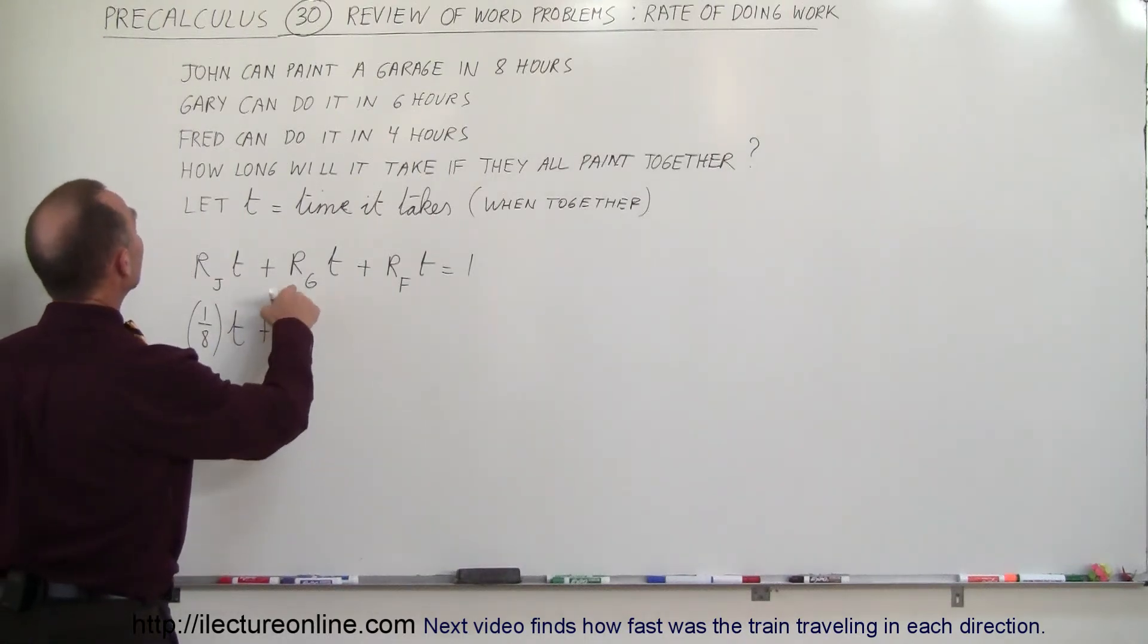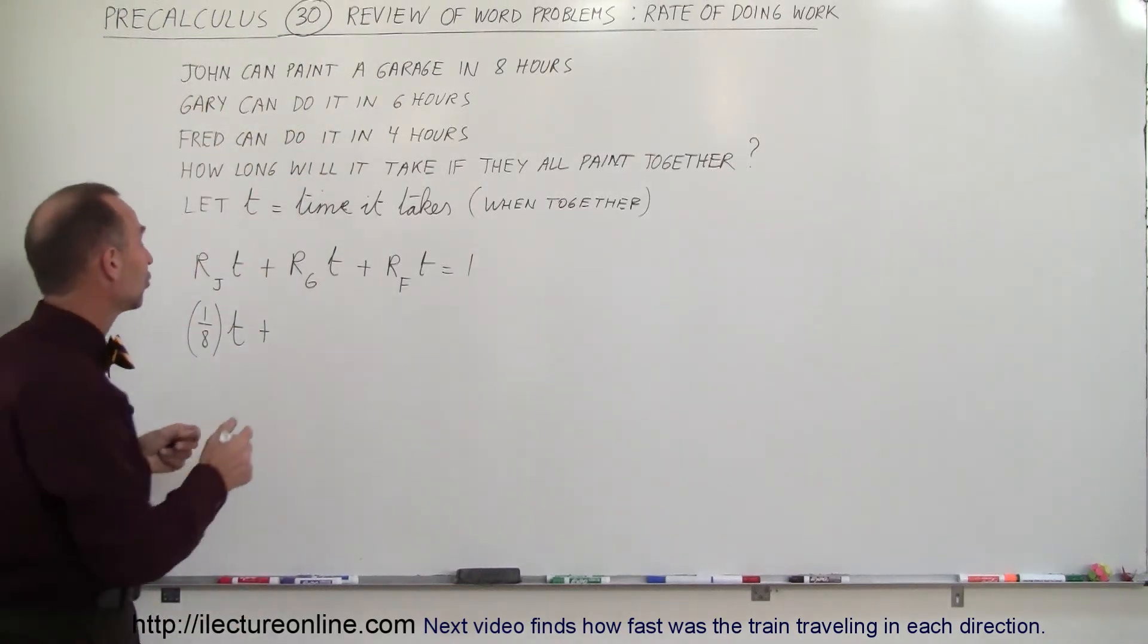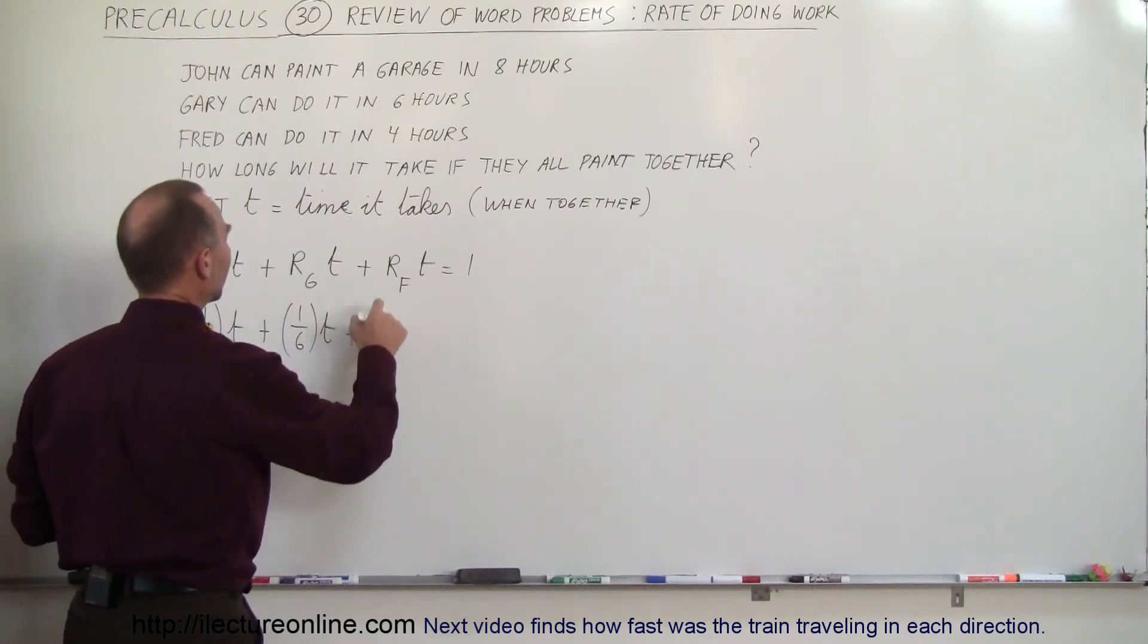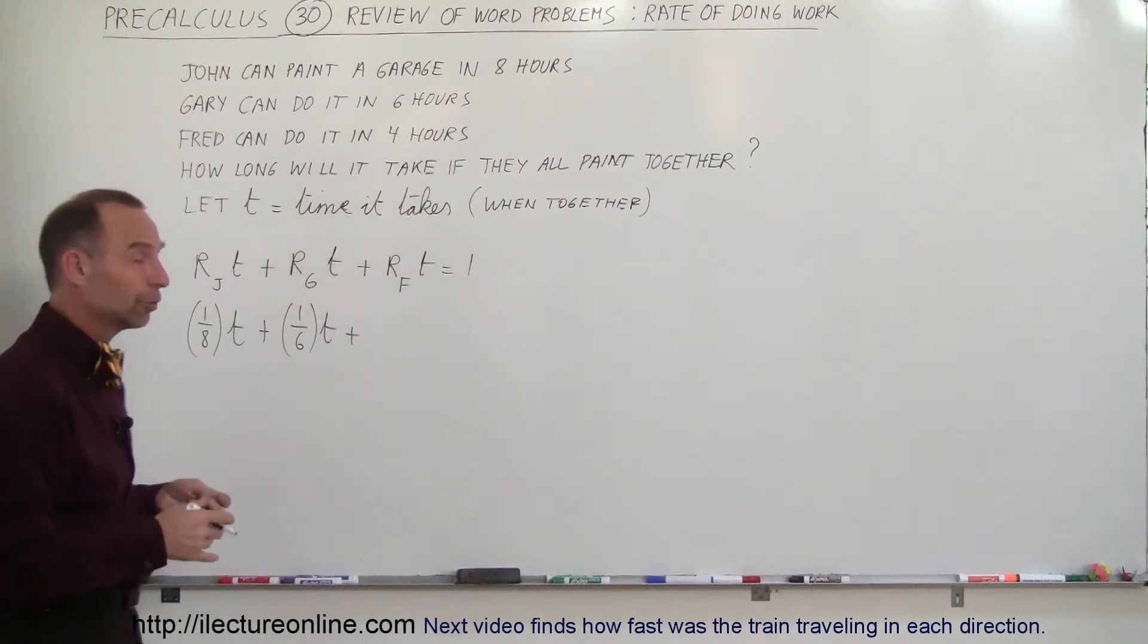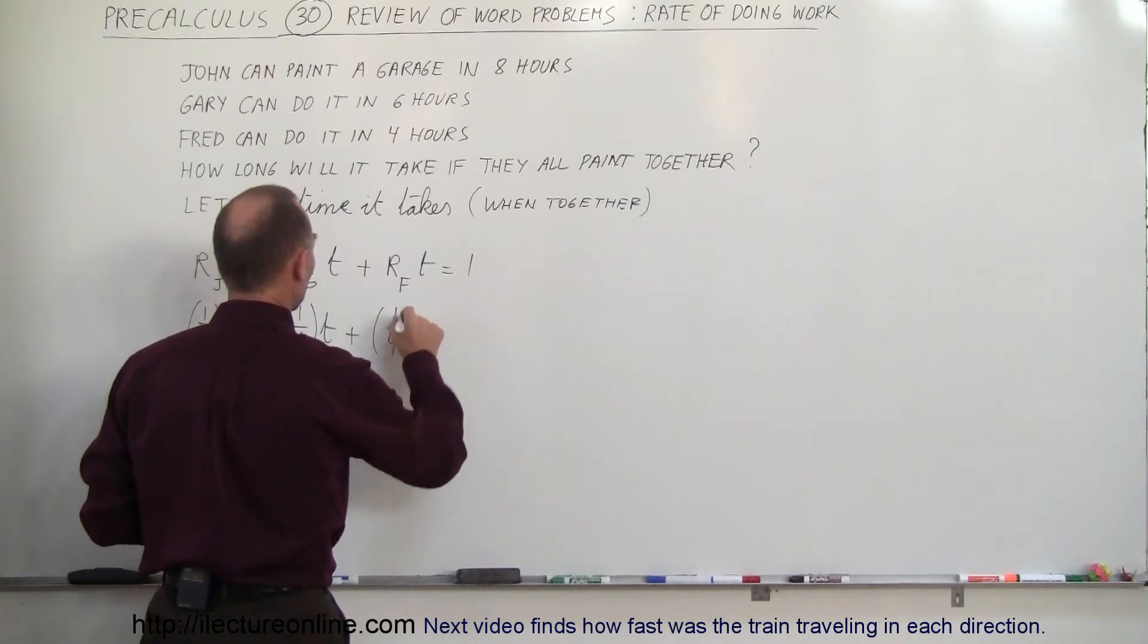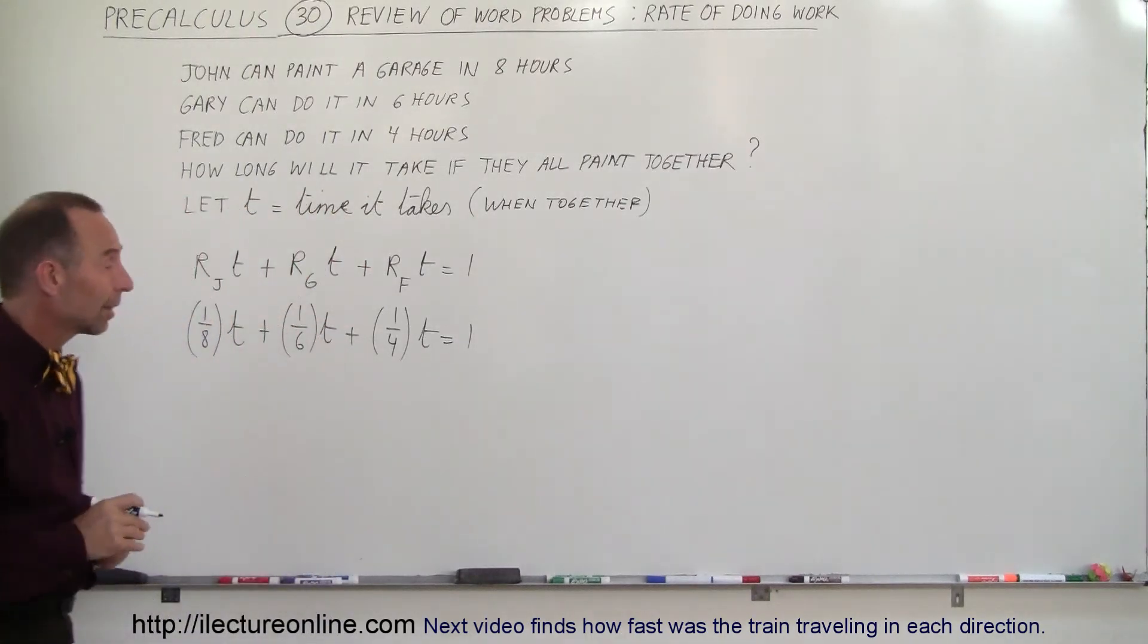Plus the rate of Gary, if Gary can do the job in six hours, then his rate is one-sixth of a garage every hour. So one-sixth times the time plus, and Fred can do it in four hours, so his rate is one-fourth. So the faster you can paint, the shorter time that it takes. So one-fourth of a garage per hour times the time and all three together will get the whole job done.